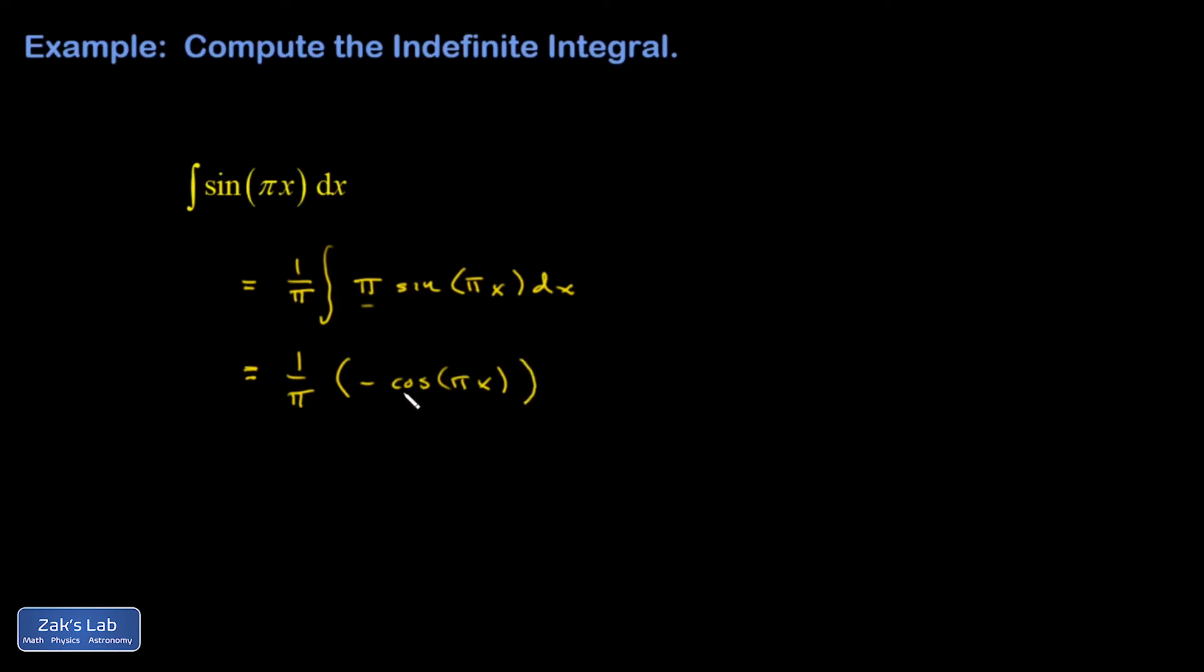And if I check that real quick, I differentiate cosine pi x. It gives me negative sine pi x. That kills this minus sine. Then the chain rule says you've got to multiply by the derivative of the interior, which gives me that pi. So it works.